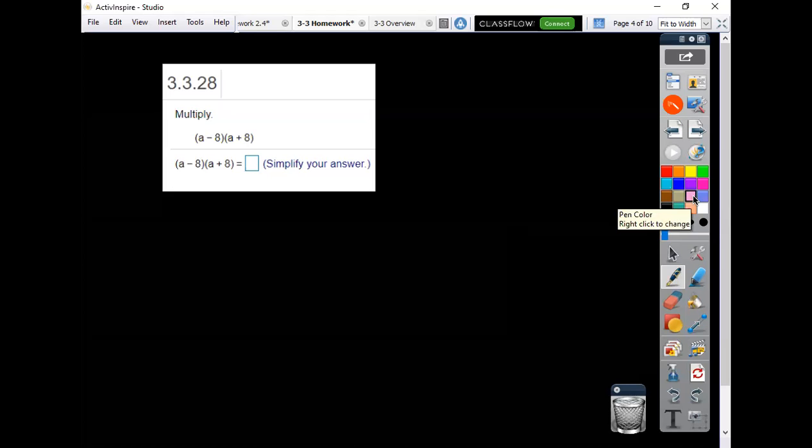Well, hopefully you've seen these before. If you haven't, you can just FOIL this out. But I think we've talked about it before. So you've got your a squared, your minus 8a, and your plus 8a.